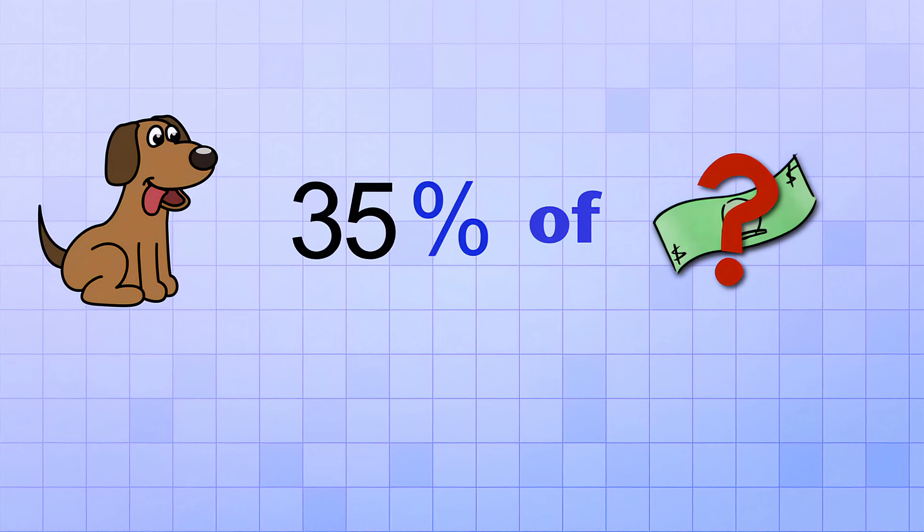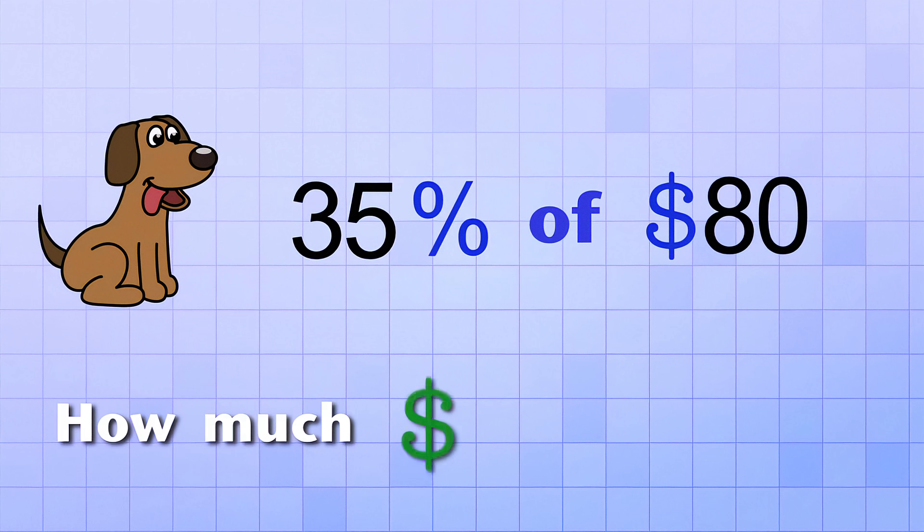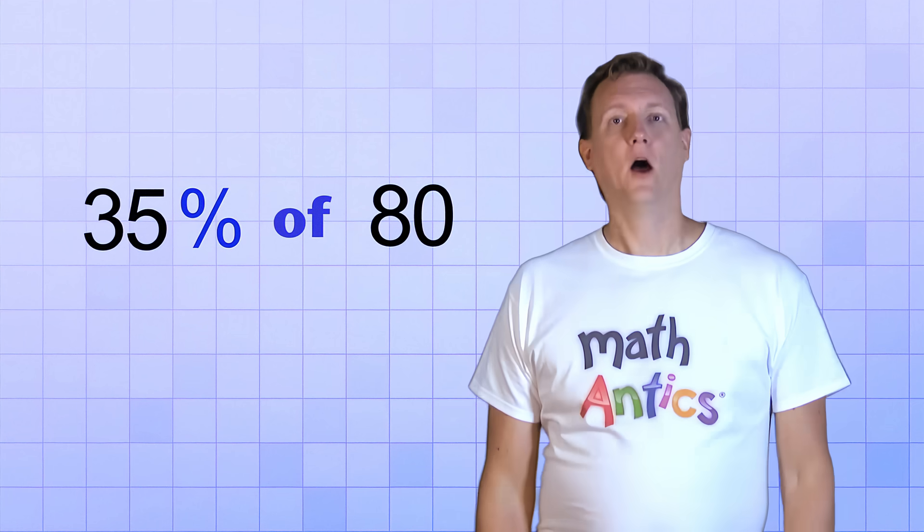Let's see a couple more examples before you practice on your own. This next one involves money. Pretend that your best friend has a job walking dogs, and offers to give you 35% of whatever he earns if you help him walk some of the dogs. If your friend earns 80 dollars that week, how much of the money will you get? In other words, you need to figure out what 35% of 80 is.